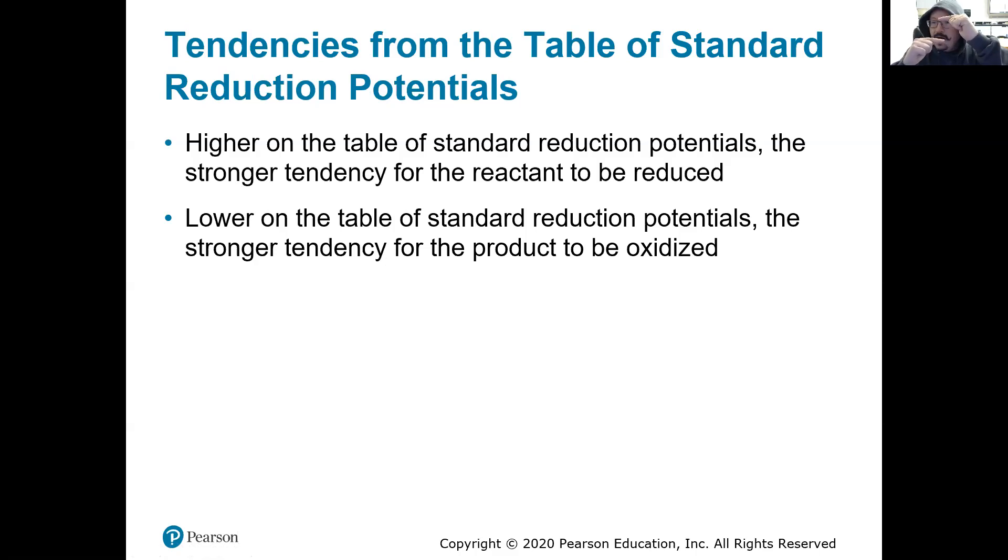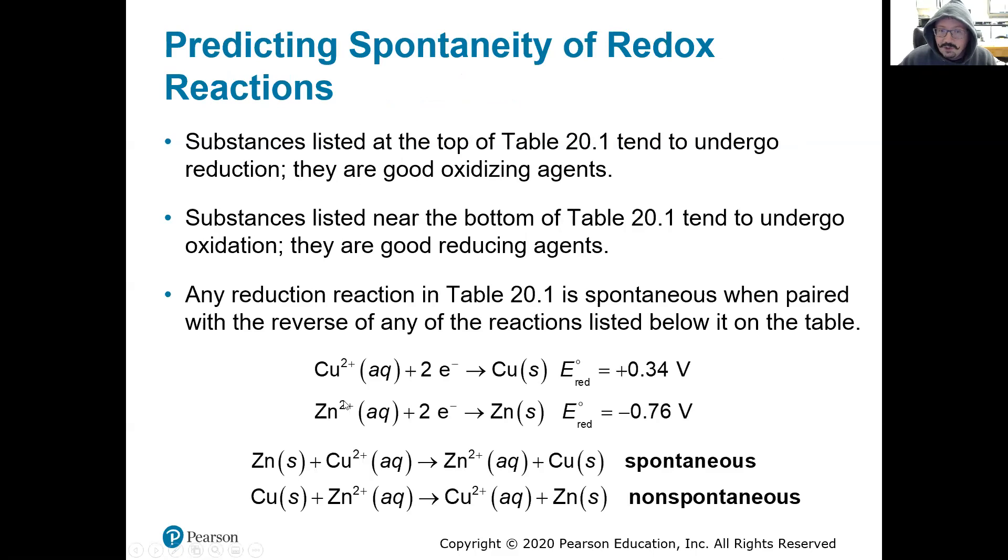Take the value from the table, find out what the cathode is, take the value from the table for the anode, subtract anode from cathode. That's it, and you'll find out that potential for your cell tendency.